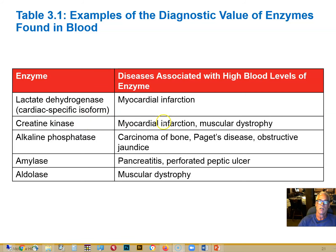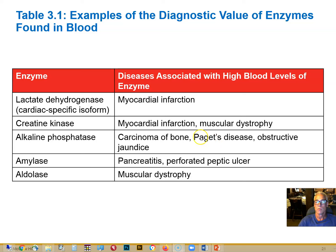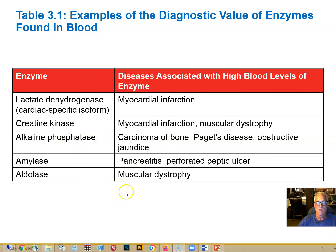Creatine kinase is also released into the blood during or after heart attacks. Muscular dystrophy is a destructive, degenerative disease of skeletal muscle cells, so a lot of cells are being destroyed and a lot of creatine kinase would be found in the blood. Certain types of alkaline phosphatase may be found in the blood during bone cancer or other unusual bone problems. We can use our molecular biology knowledge about enzymes and how to identify them to diagnose disease.